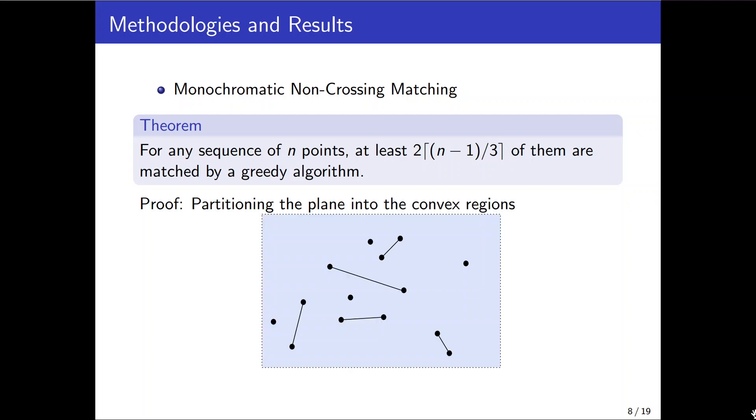In order to prove we considered the final matching of a greedy algorithm then we extended the line segments in an arbitrary order to form some convex regions. The greedy property actually implies that there is at most one unmatched points per convex region otherwise they should have been matched.